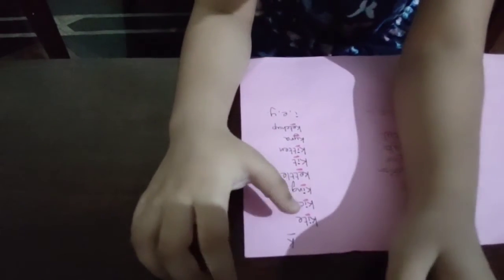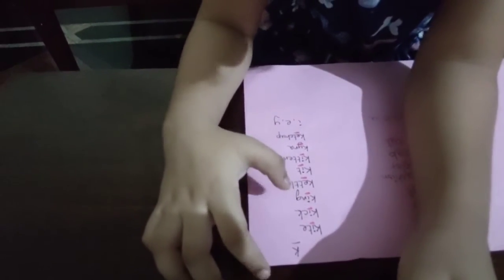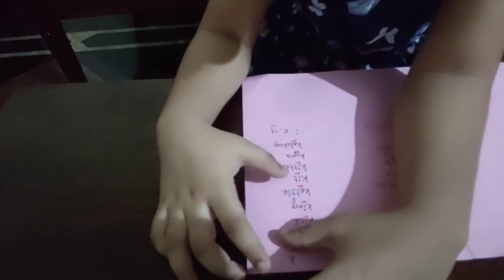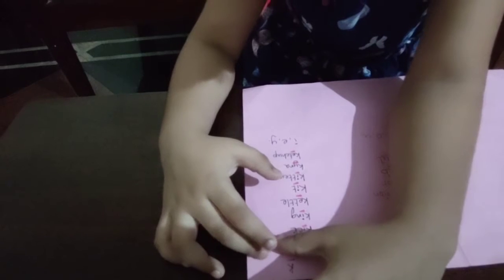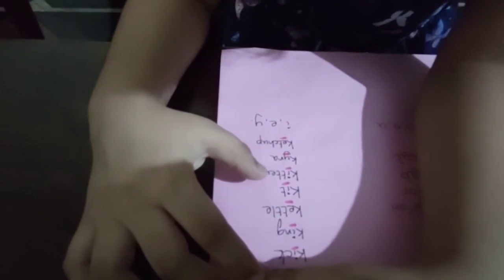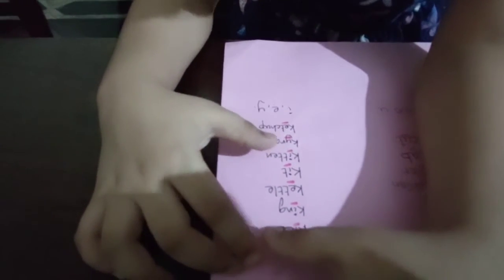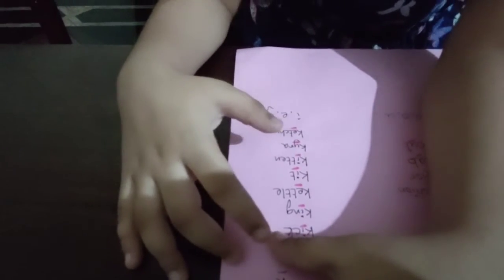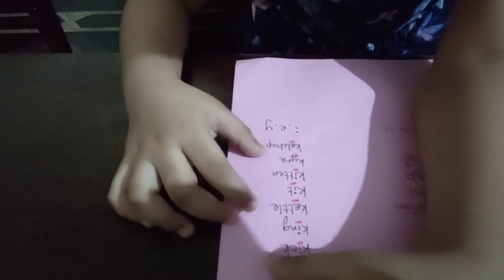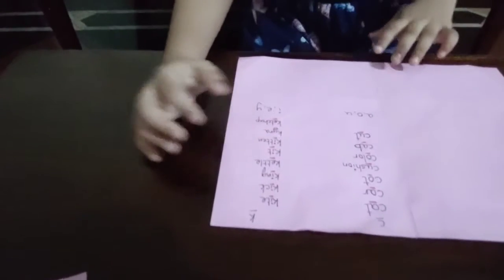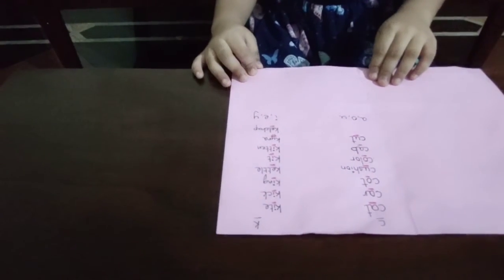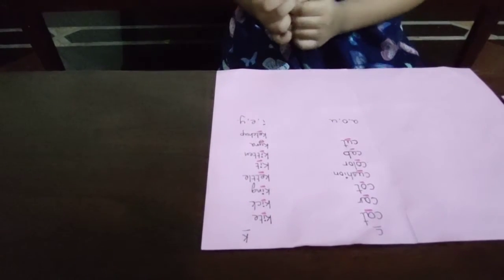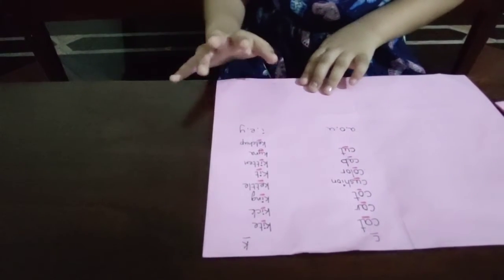K for kite, kick, king, kitten, kettle, kit, ketchup. So in all these words, K comes with I, E, Y.